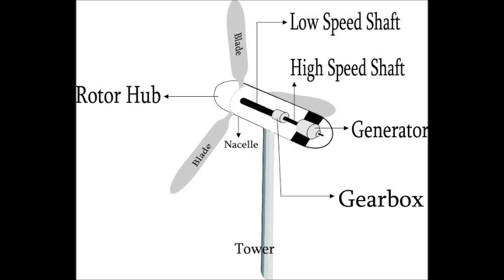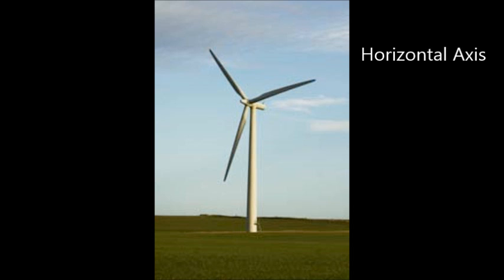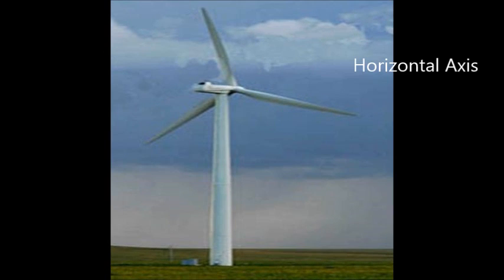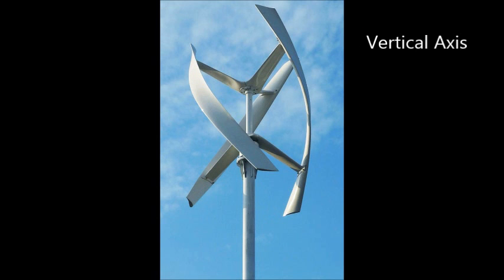There are two different types of windmills: the horizontal axis variety and the vertical axis variety. A horizontal axis has its blades rotating on an axis parallel to the ground. A vertical axis has its blades rotating on an axis perpendicular to the ground.